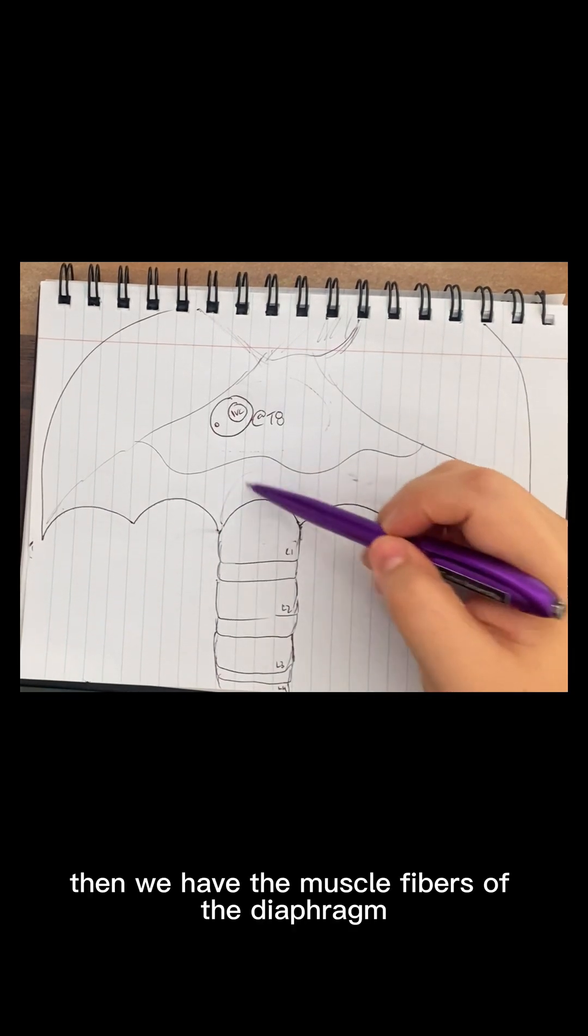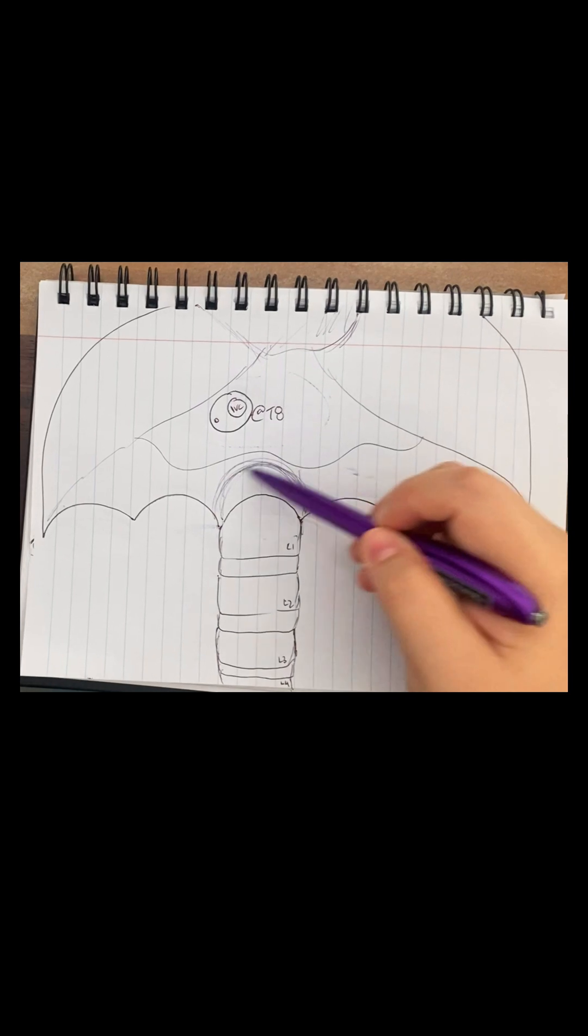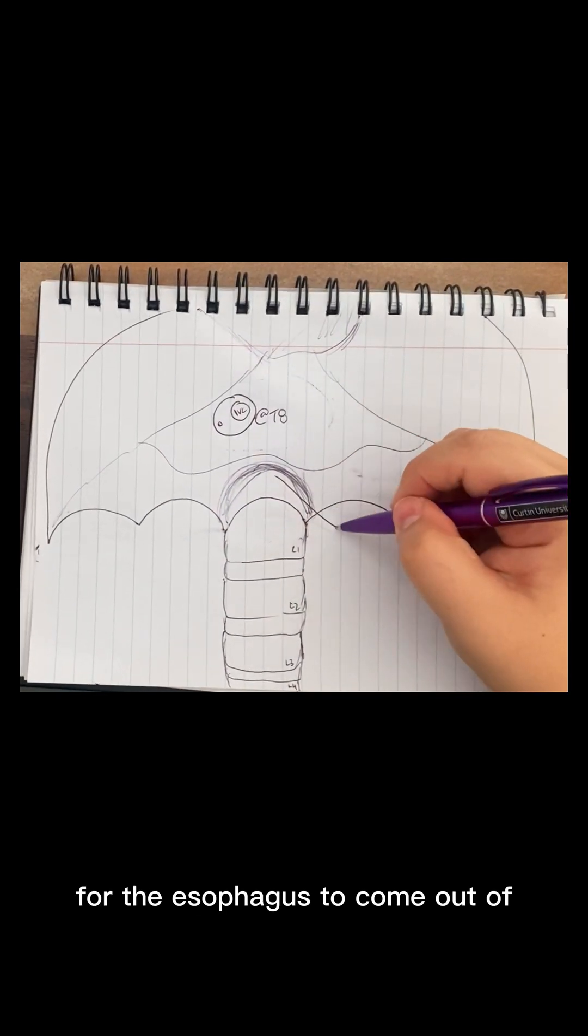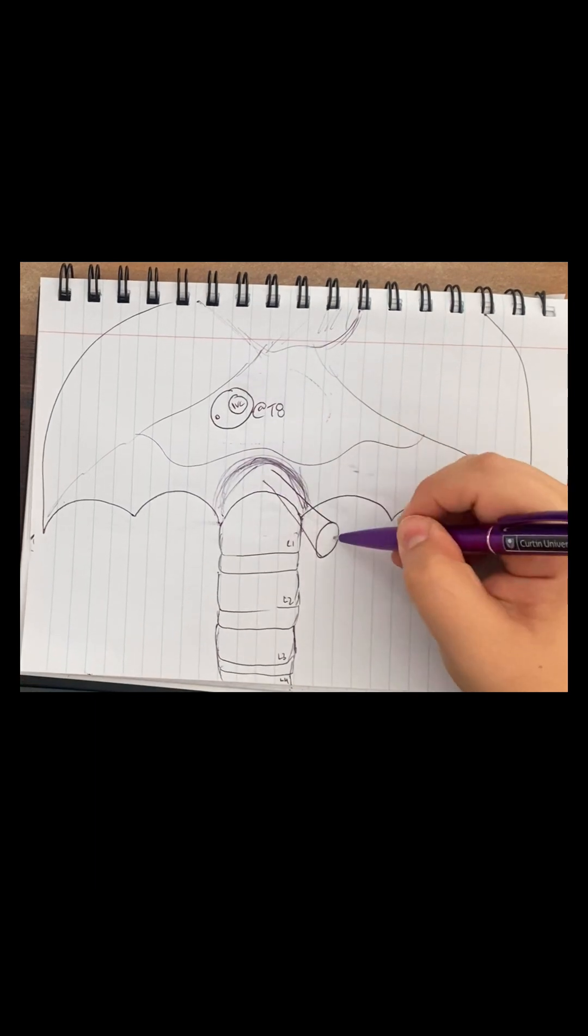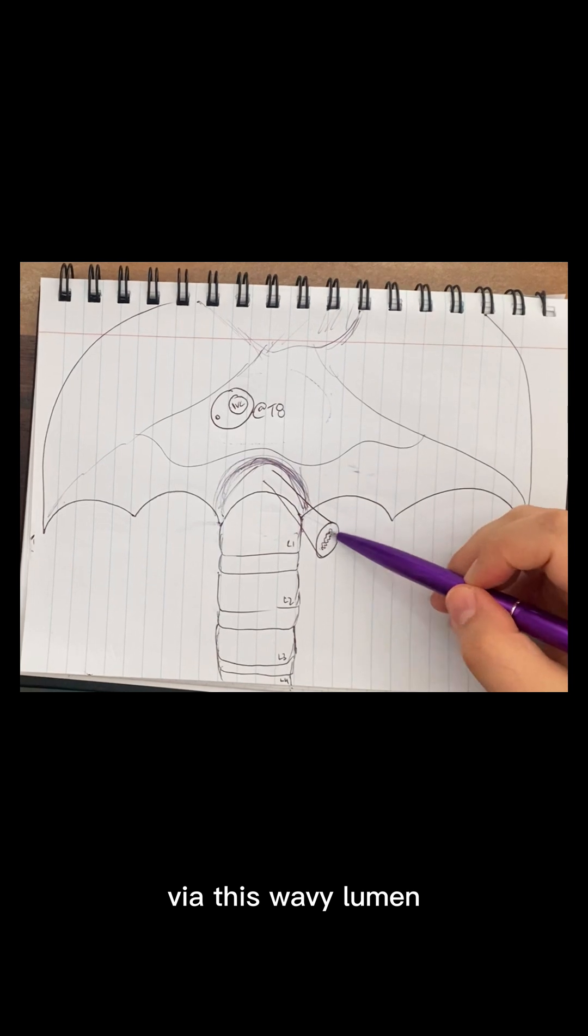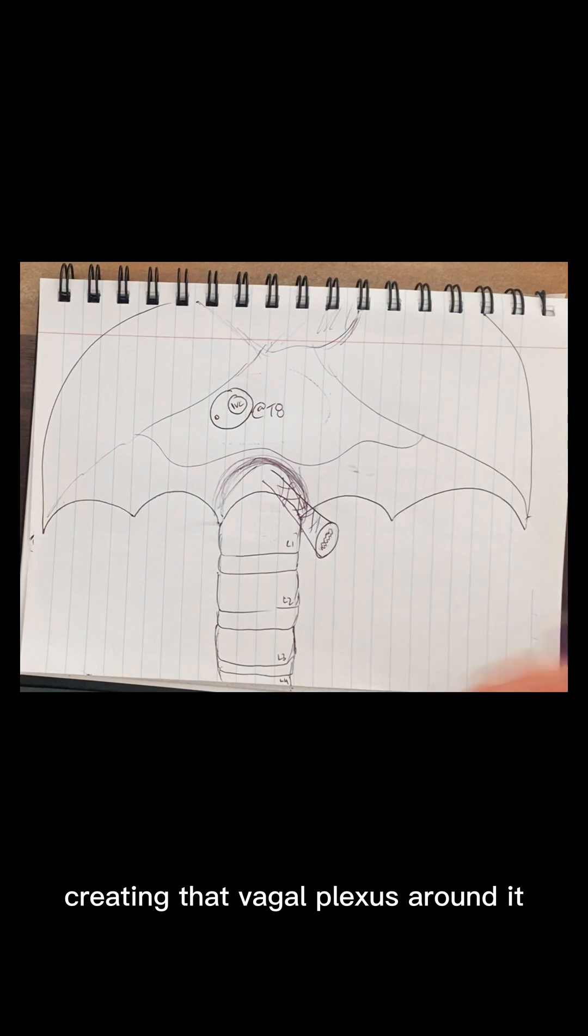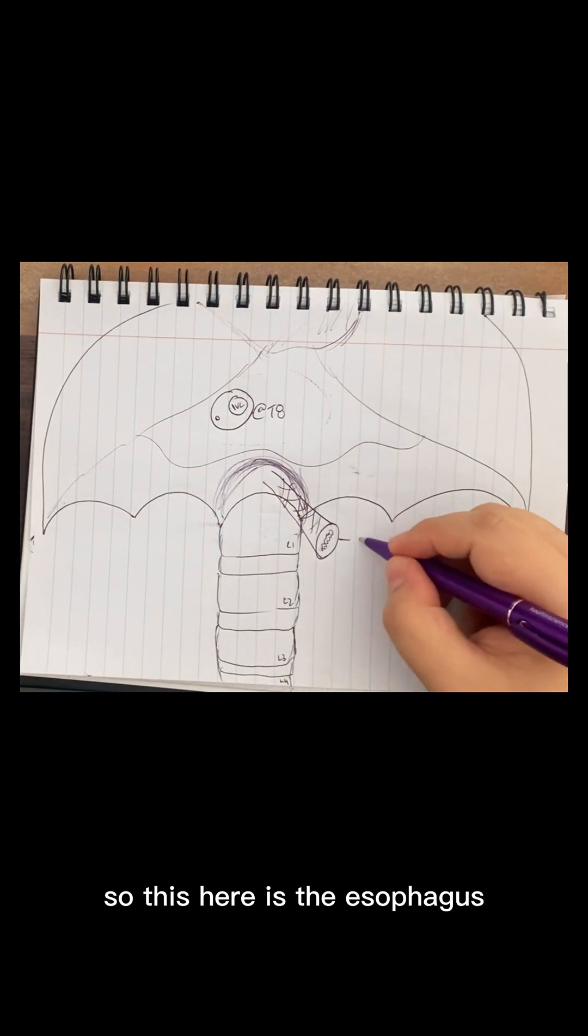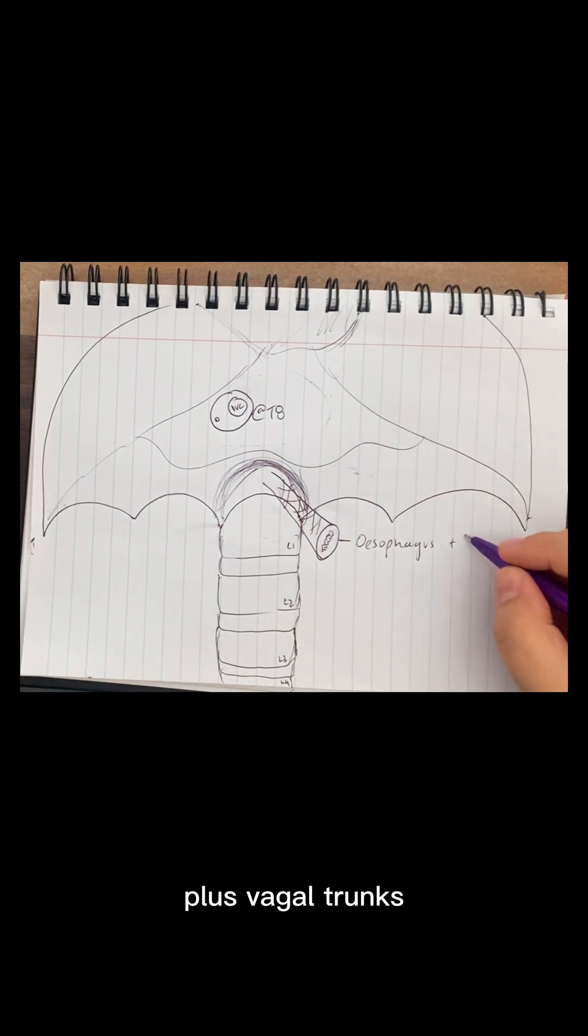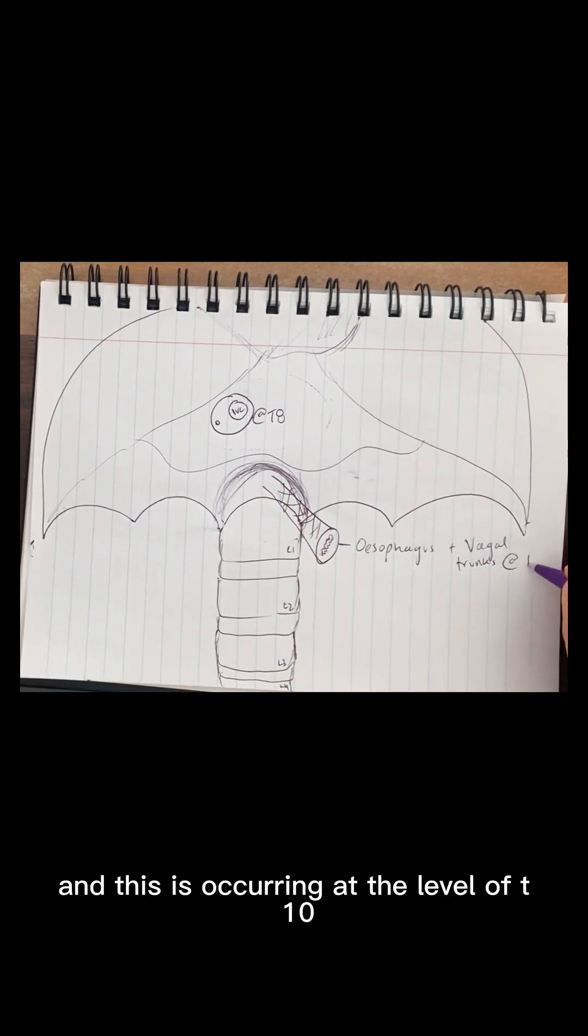Then we have the muscle fibers of the diaphragm creating an arch. And this creates a little hiatus for the esophagus to come out of. Now the esophagus is always identifiable via this wavy lumen. And the esophagus will also have the vagal trunks creating that vagal plexus around it. So this here is the esophagus plus vagal trunks. And this is occurring at the level of T10.